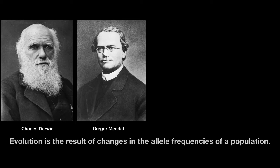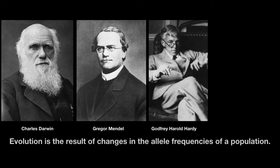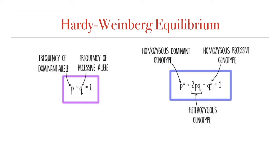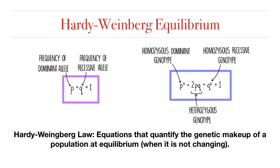But how can we know if allele frequencies in a population are changing or not? Well, to do that, we can use an algebraic equation that was discovered independently in 1908 by Godfrey Harold Hardy, a British mathematician, and by Wilhelm Weinberg, a German physician. The algebraic equations formulated by these two men are what we call the Hardy-Weinberg equilibrium, or Hardy-Weinberg law — equations used to quantify the genetic makeup of a population at equilibrium, that is, a population that is not evolving.